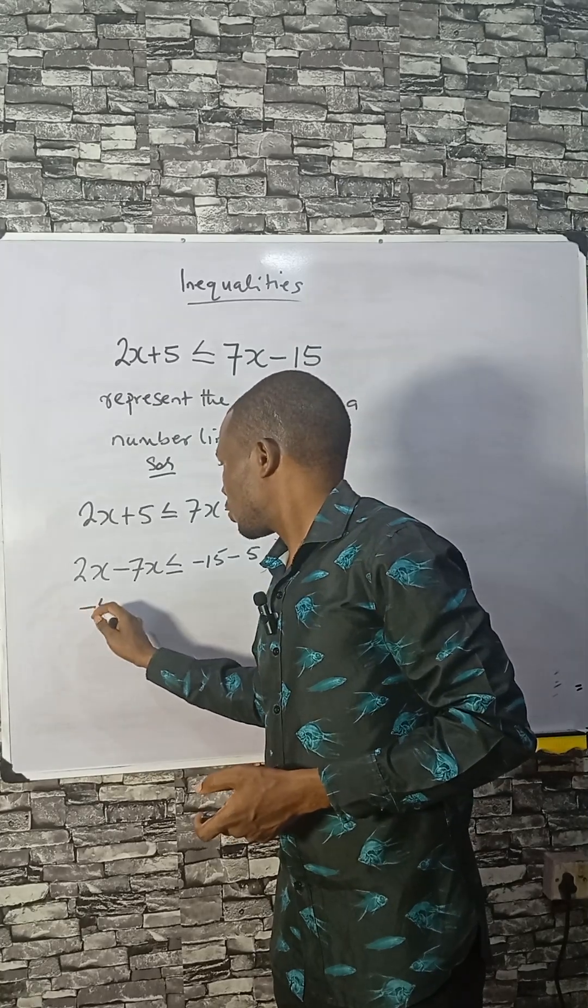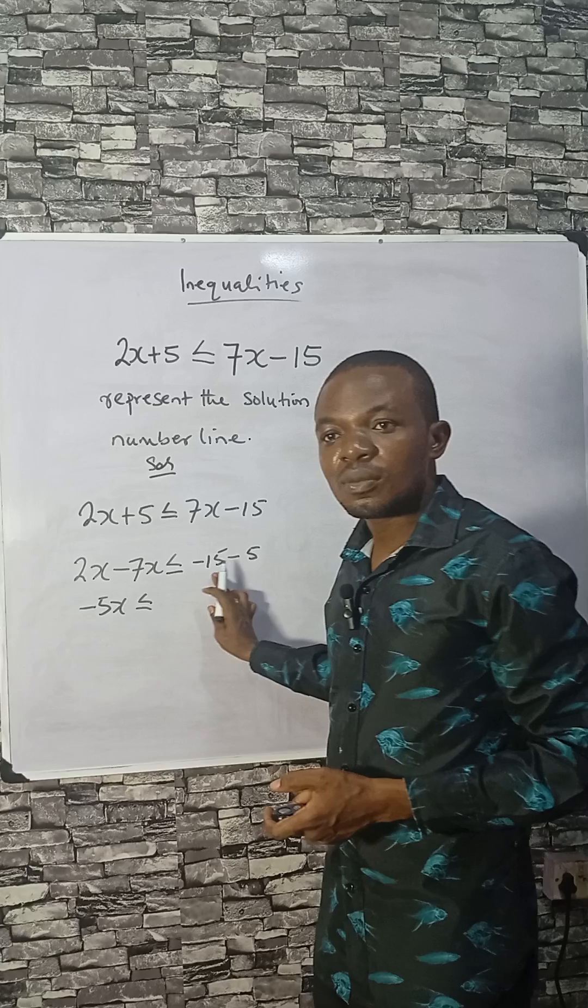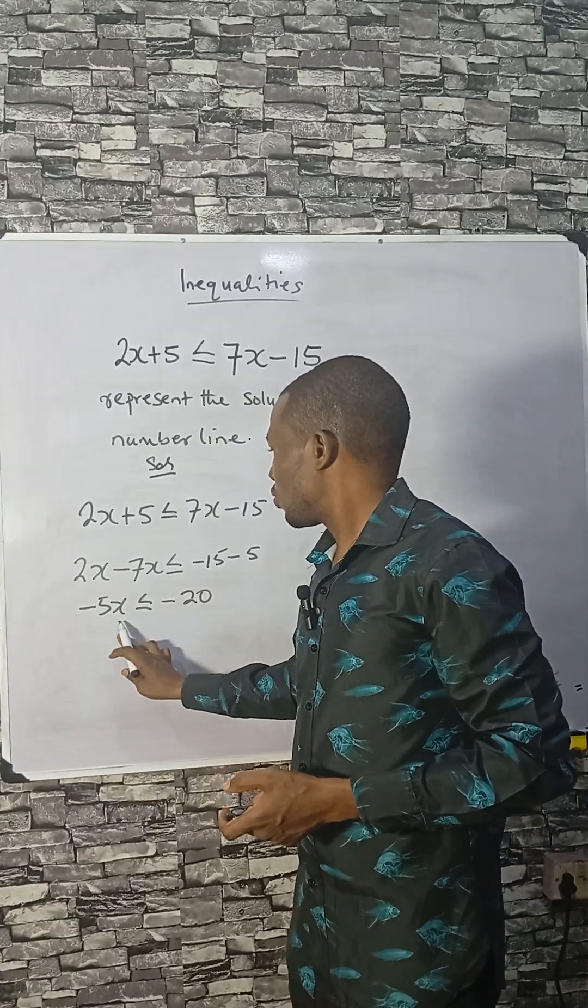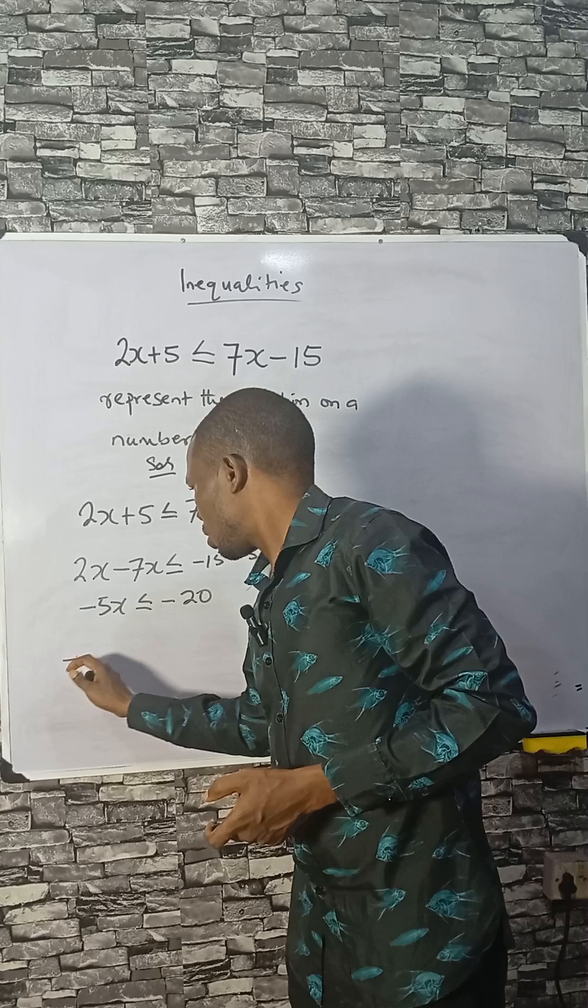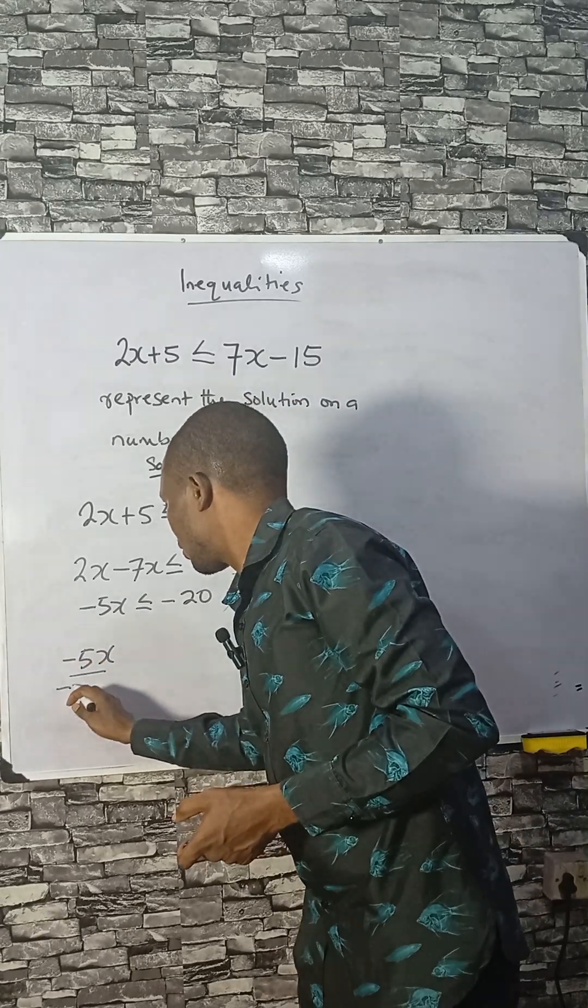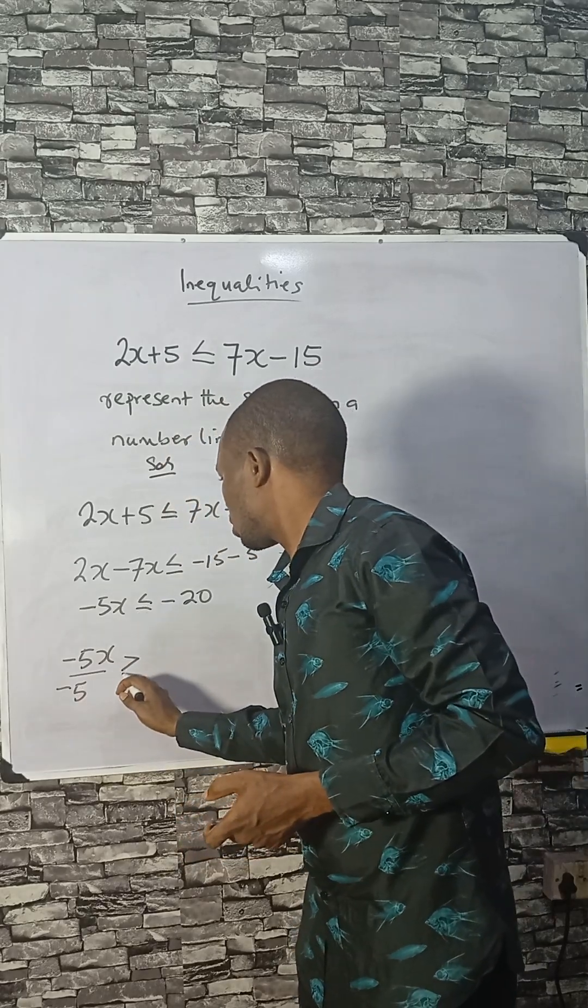We have -5x ≤ -20. Now to solve for x, we divide both sides by -5. When you divide by a negative number, the inequality sign changes to the opposite direction.